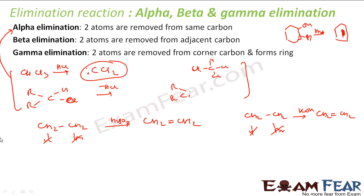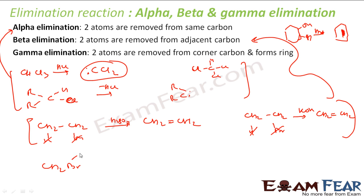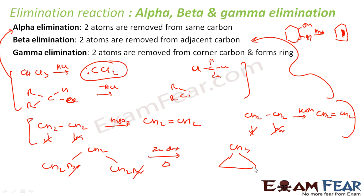In gamma elimination, atoms are removed from corner carbons and a ring is formed. For example, with CH2Br-CH2-CH2Br, passing with zinc dust and heating causes one bromine to leave from each end, forming a ring. This is an example of gamma elimination.